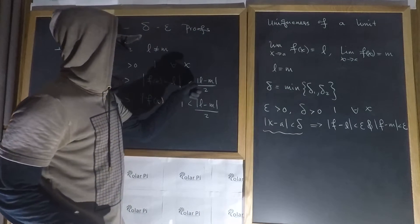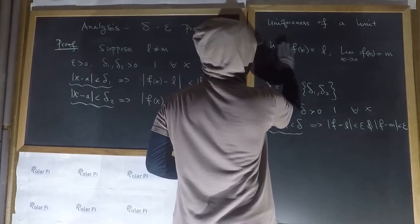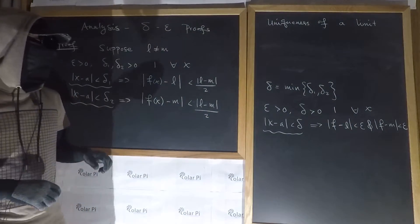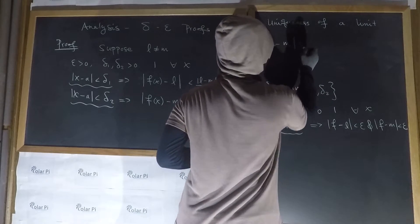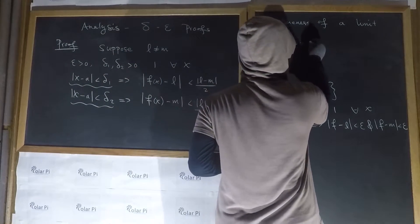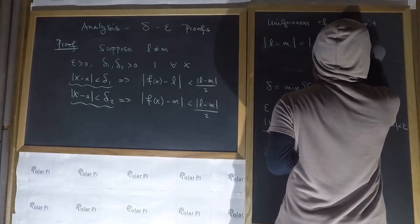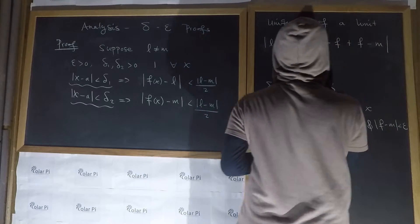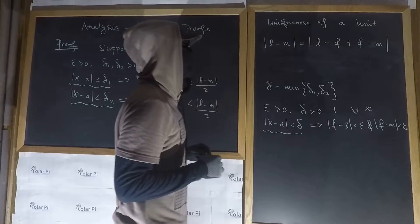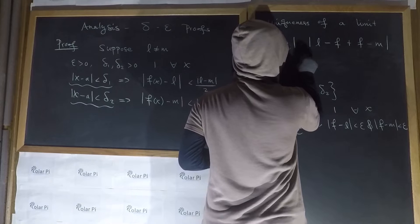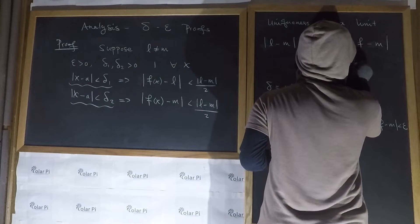Remember, we've let epsilon equal |L − M| / 2. Now, what we've written suggests the following: notice that |L − M|, if we rewrite it creatively, equals the absolute value of (L − f(x)) + (f(x) − M). You can easily see that this equals L − M inside the absolute value, since minus f plus f is zero. But in turn, by the triangle inequality, this is less than or equal to |L − f(x)| + |f(x) − M|.